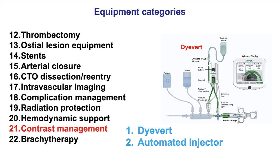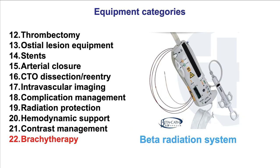Category number 21 is contrast management. There are systems such as automated injectors and the AVERT system that can minimize the amount of contrast administered to the patient, and consequently the risk of contrast-induced acute kidney injury. And finally, there is the brachytherapy system, still used for recurrent in-stent restenosis. There is only one system — the Beta radiation system — that can be used in both vein grafts and native coronary arteries.